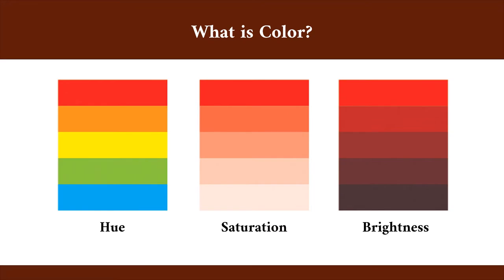Colors can vary in some attributes, such as hue, saturation, and brightness. Hue is how we usually classify colors, like blue or red. Saturation is related to the intensity of the color, and brightness is related to how dark or bright the color appears to be.